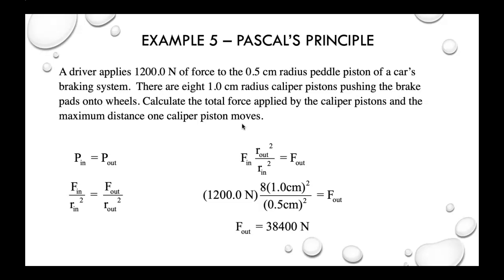Another example. So this is the one with the car braking system. A driver applies 1,200 newtons of force to a 0.5 cm radius pedal. There's eight 1 cm radius caliper pistons pushing brake pads onto the wheels. So again, a little baby force from a grandma driving a car can stop all four wheels. So calculate the total force applied by the caliper pistons and the maximum distance one caliper piston moves. I don't know if I have that last part done there. I think this is just the first part. So the total force applied by the pistons. So again, we know on the left, pressure in equals pressure out.